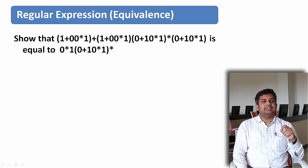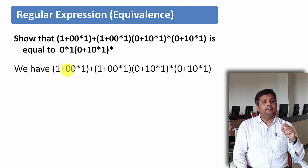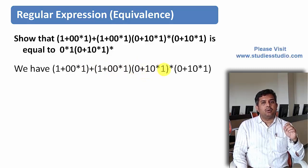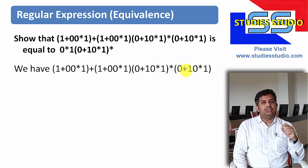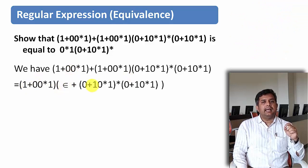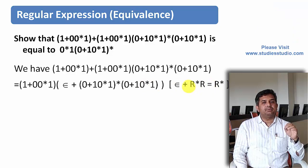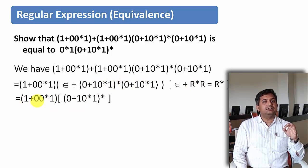Let us do one more example. We need to show that the left-hand side expression — (1 + 00*1) + (1 + 00*1)(0 + 10*1)* — concatenated to (0 + 10*1) is equivalent to the right-hand side. We can take (1 + 00*1) as a common factor, giving us (1 + 00*1)(ε + (0 + 10*1)*(0 + 10*1)). Both factors inside are the same, so we apply ε + R*R = R*, getting (1 + 00*1)(0 + 10*1)*.